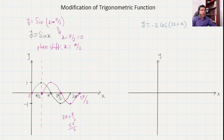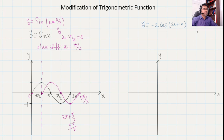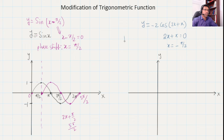Now let's do the same for y equal to minus 2 cos of 2x plus π. The amplitude is 2, and the negative means the graph will be reflecting along the x-axis. The cosine graph usually starts from the upper value. We need to calculate the phase shift again, so we set 2x plus π equal to 0, which gives us x equal to minus π/2. That is our phase shift — the graph will start from minus π/2.